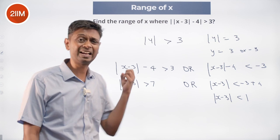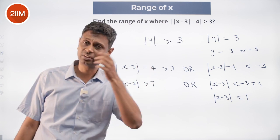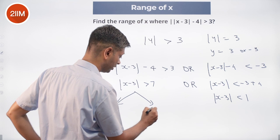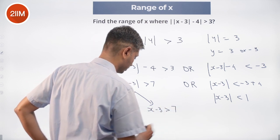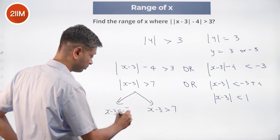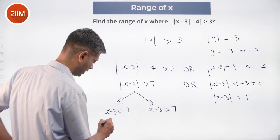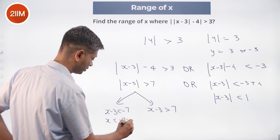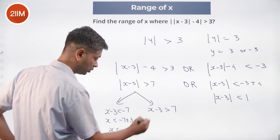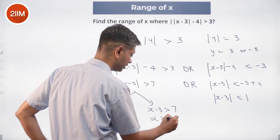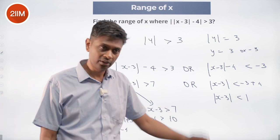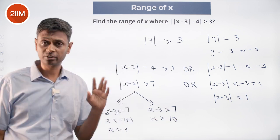Modulus of (x minus 3) is greater than 7. Using the same principle: either x minus 3 is greater than 7, or x minus 3 is less than minus 7. So x is greater than 7 plus 3, meaning x greater than 10, or x is less than minus 7 plus 3, meaning x less than minus 4. Both work.